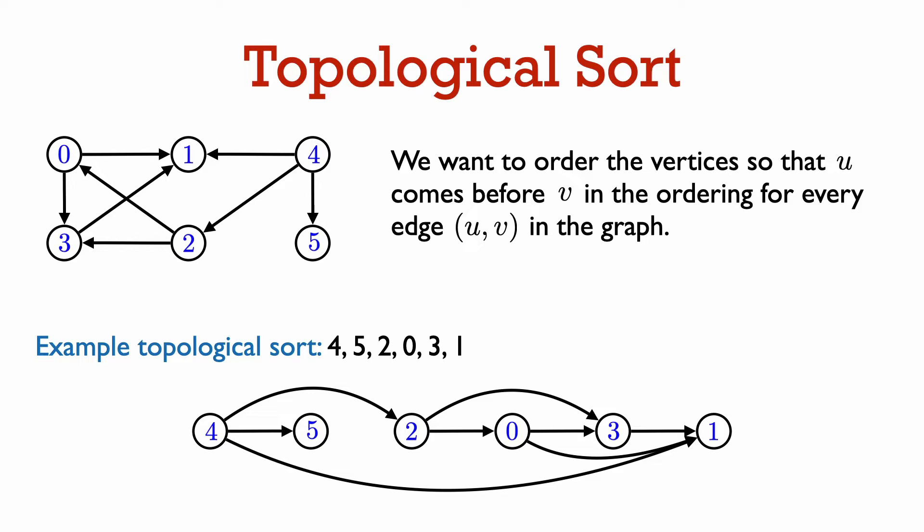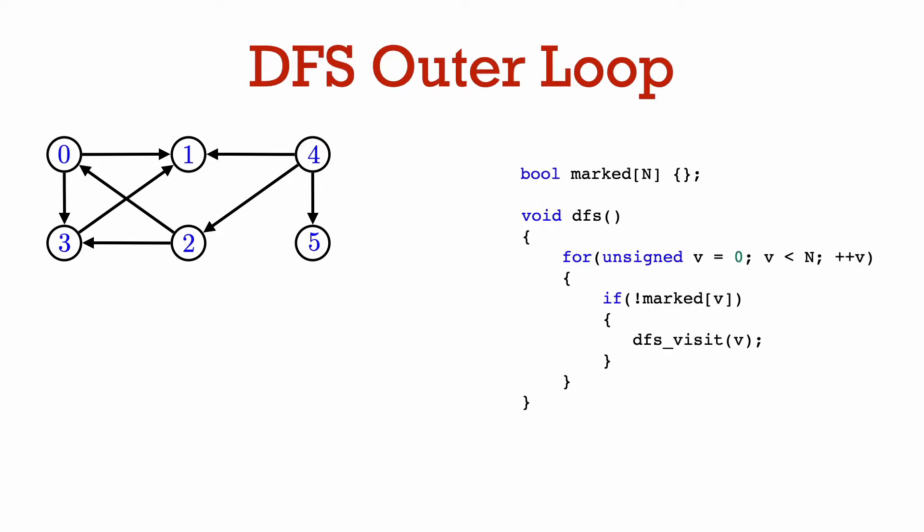For this example graph, one possible topological sort is 4, 5, 2, 0, 3, 1. A way to visualize that this is a topological sort is that when we put the vertices on a horizontal line from left to right in the topologically sorted order, then all edges go from left to right. We can actually directly find a topological sort using depth-first search — it just takes a one-line modification to the code. We already have the background to understand why the algorithm works from our discussion about detecting a directed cycle.